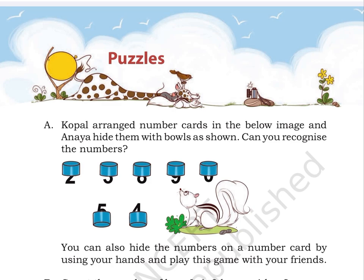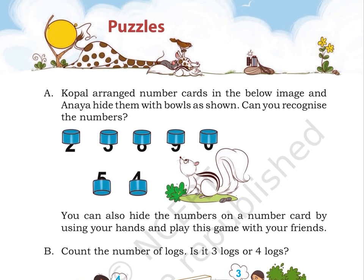Puzzle A: Kopal arranged the number cards and Anaya hid them with bowls as shown. Can you recognize the numbers? Here we can observe half part of few numbers. The squirrel is also observing the numbers. Can you identify what numbers these are?